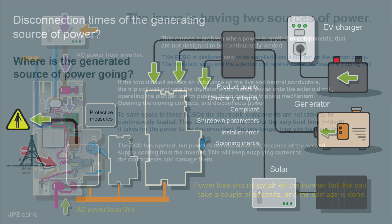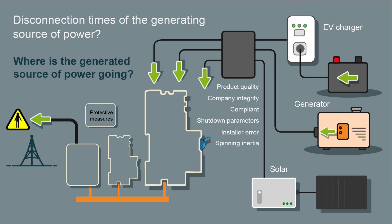This is the problem: the RCD has opened, but power is not disconnected. The opening of the RCD should disconnect the generating source of power — the inverter or the EV charger — or so you'd think. How quickly does it do it? I don't know. It's probably device-dependent and I doubt there's a single standard. There's also the issue of product quality and company integrity. Are these inverters fully compliant? On some, you can have shutdown parameters which you can change, so you might get installer error. You might also have mechanical devices with some spinning inertia. There are plenty of things which might affect how long it takes for power to stop feeding these RCBOs.